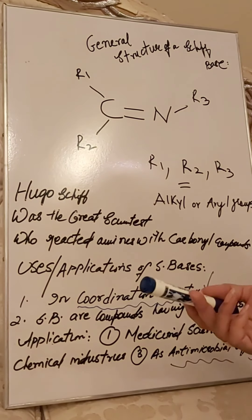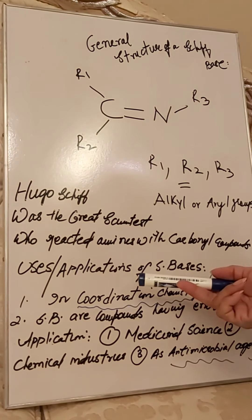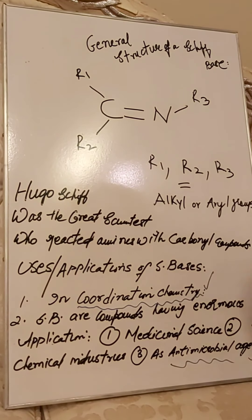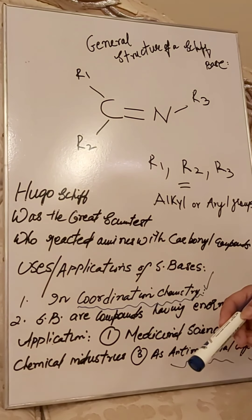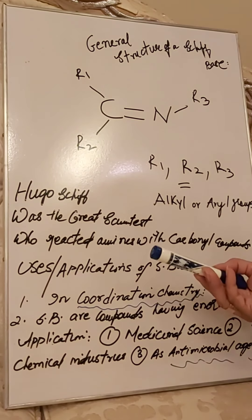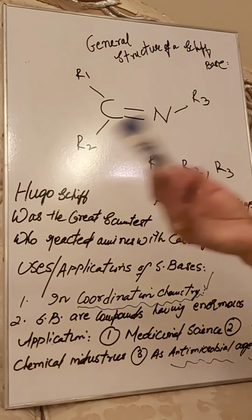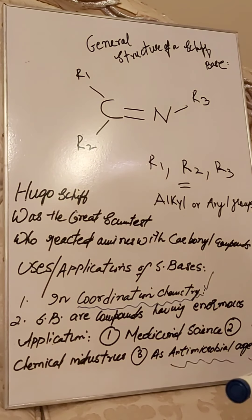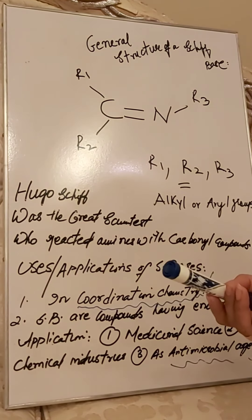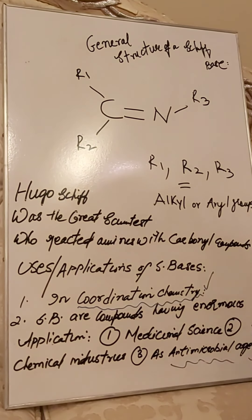Schiff base metal complexes are used for the detoxification of water by removing organic pollutants. The C=N relationship in a Schiff base is an essential feature of its bioactivity, including antimicrobial activity. Schiff bases can also be polymerized to form Schiff base polymers, which have conjugated carbon-carbon double bond and carbon-nitrogen bonds and have been gaining researcher attention.